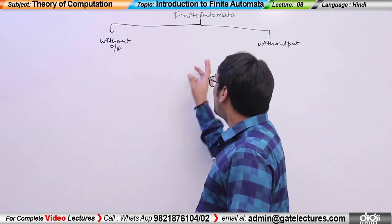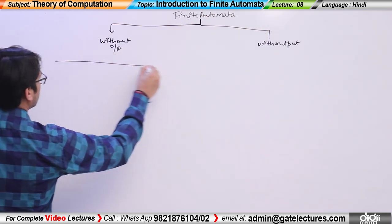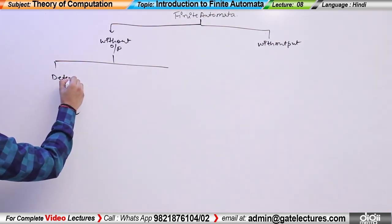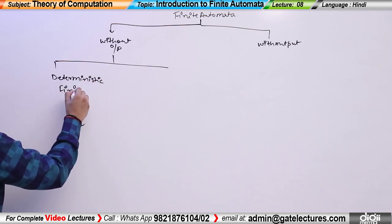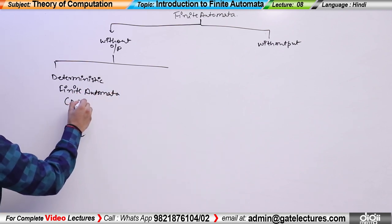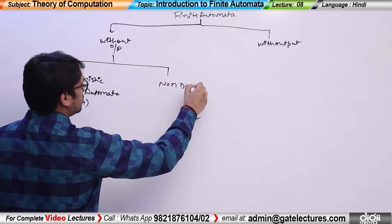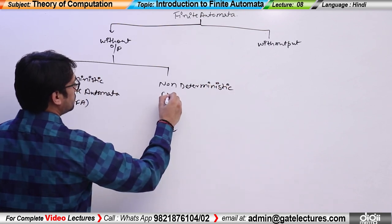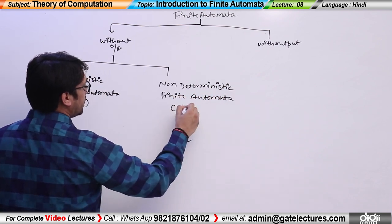So the first topic is finite automata without output. This has two further types. The first one we will study is Deterministic Finite Automata, which we call DFA. And the second one is Non-Deterministic Finite Automata, which we call NFA.